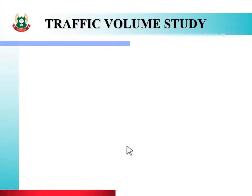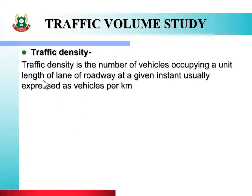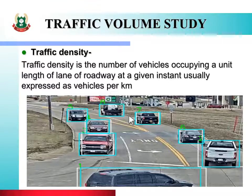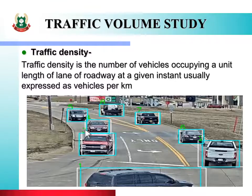Next है traffic density. Traffic density is the number of vehicles occupying a unit length of lane of roadway at a given instant, usually expressed as vehicles per kilometer. एक kilometer road पर generally कितने vehicles वहाँ पे road occupy करते हैं इसे traffic density कहते हैं — मतलब वहाँ पे कितने vehicles रुक सकते हैं।